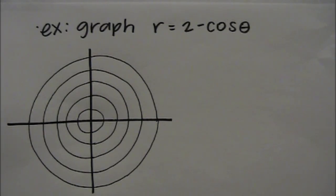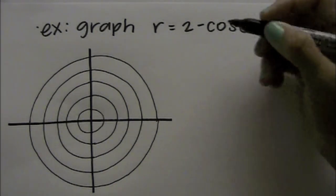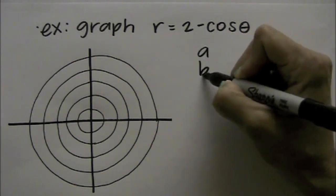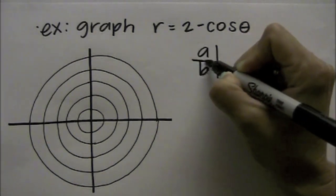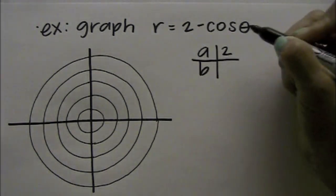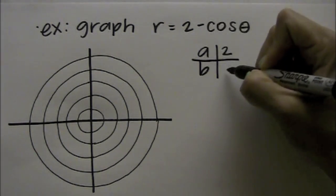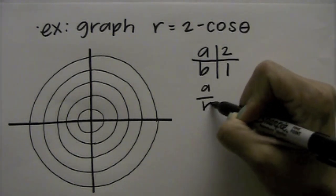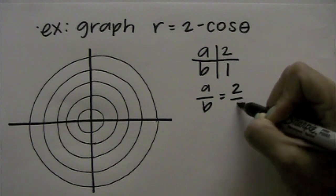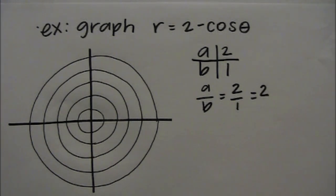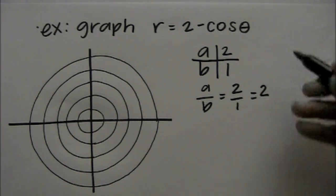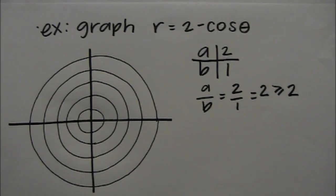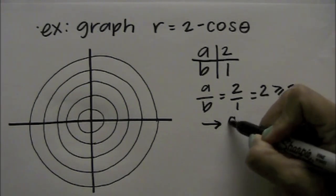Our next example says graph r equals 2 minus cosine of theta. What we're going to do is draw an a, b chart. A is 2, b is the number in front of cosine, which is 1. By creating the ratio a over b, you would get 2 over 1, which equals 2. And if you check the chart, 2 is greater or equal to 2, therefore telling us that this is going to have no inner loop, no dimple, and it's actually going to be convex.